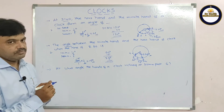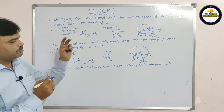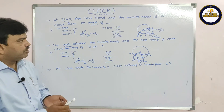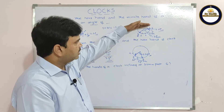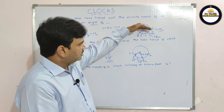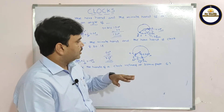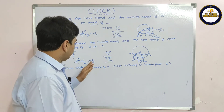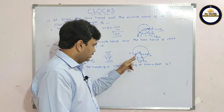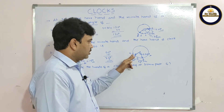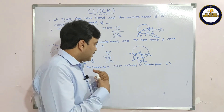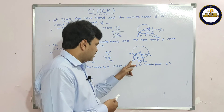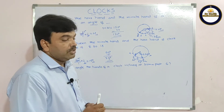Notice the difference from the previous problem: previously we subtracted, but here we are adding. In the 3:40 case, we assumed the hour hand was at 3 but it hadn't reached 8 yet, so we subtracted. Here at 8:30, the hour hand has moved 15 degrees more beyond 8, so we add: 60 + 15 = 75 degrees.